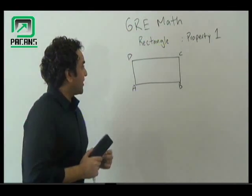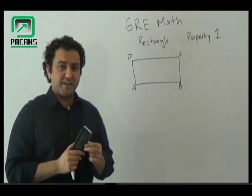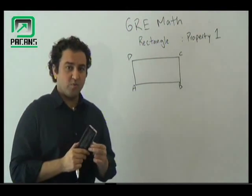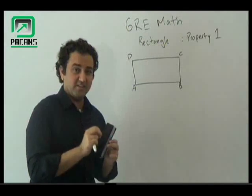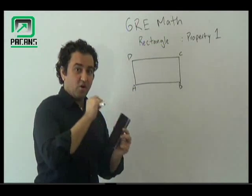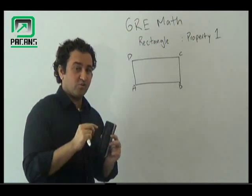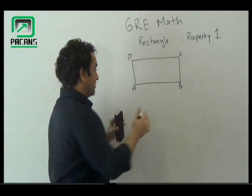Hello everyone, welcome to Peckins. We are working on rectangle property number one. The number one property for a rectangle is that the opposite sides are going to be parallel.